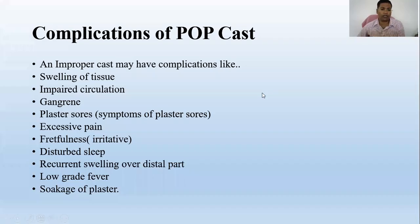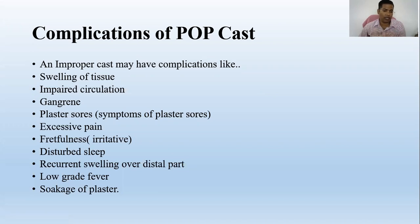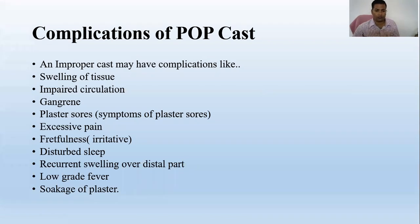If the cast is not applied properly, these kinds of complications may happen: swelling of tissue, impaired circulation, gangrene, plaster sores, and excessive pain.